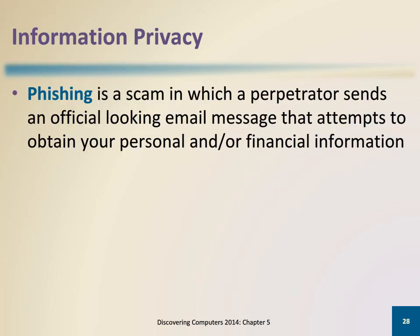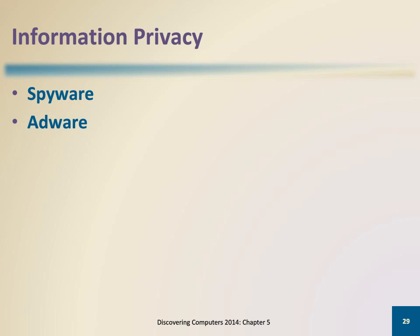Phishing involves an official-looking email message that attempts to obtain your personal and financial information. Clickjacking occurs when an object that can be clicked on in a website contains a malicious program. Spyware is a program placed on a computer or mobile device without the user's knowledge that secretly collects information about the user and then communicates the information it collects to some outside source while the user is online. Adware is a program that displays an online advertisement in a banner or pop-up window on web pages, email messages, or other internet services.